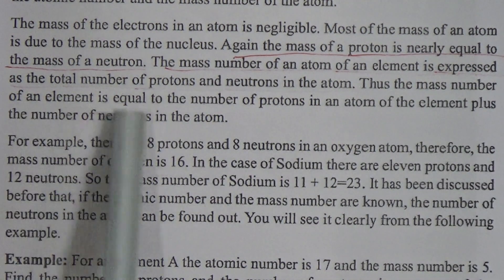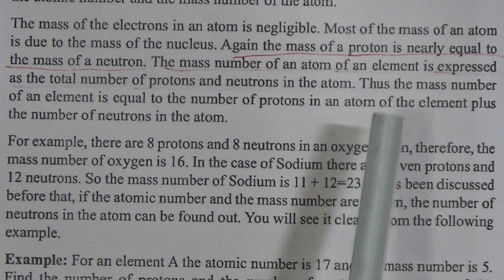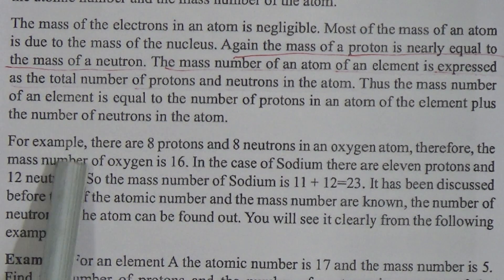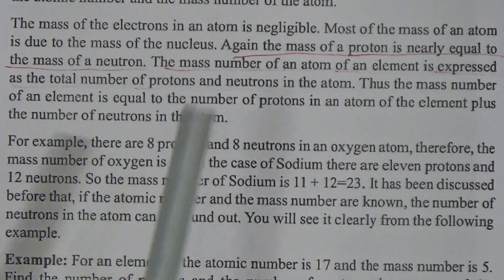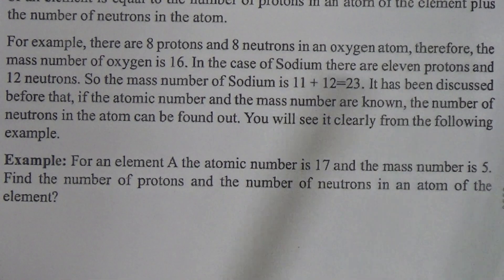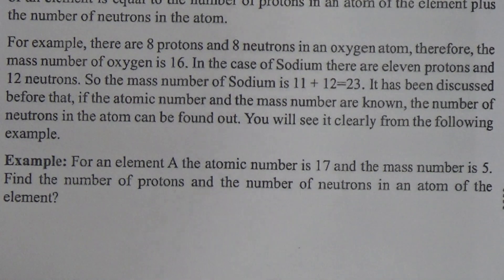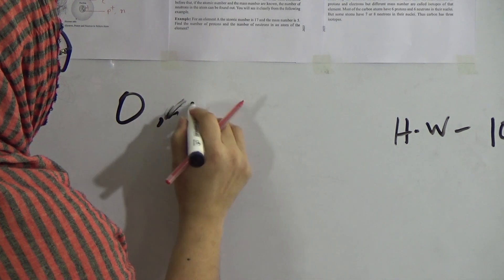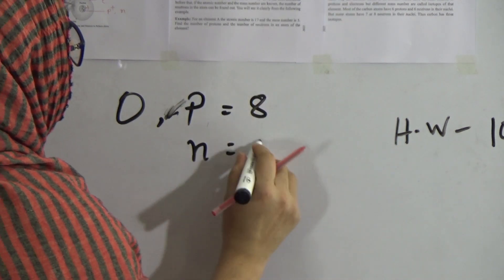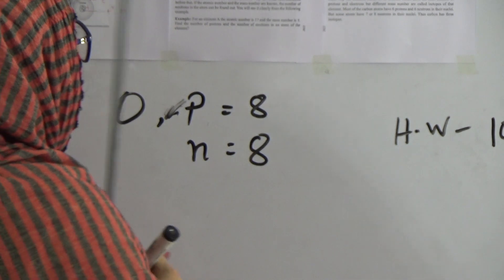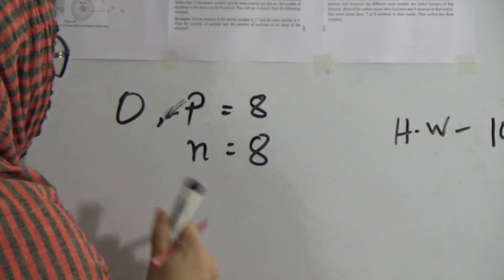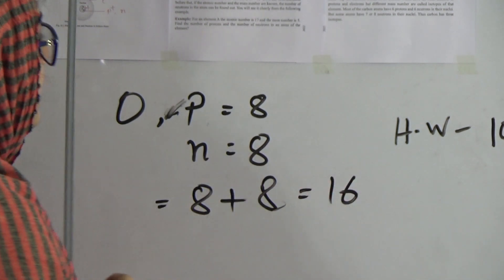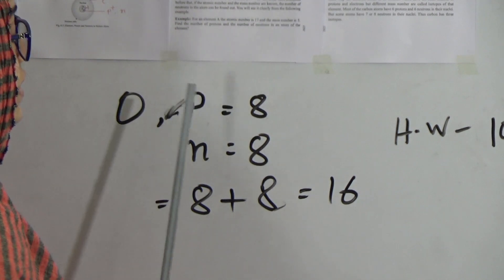The mass number of an element is equal to the number of protons plus the number of neutrons in the atom. For example, there are eight protons and eight neutrons in an oxygen atom. Therefore the mass number of oxygen will be eight plus eight, which equals 16. So the mass number of oxygen is 16.